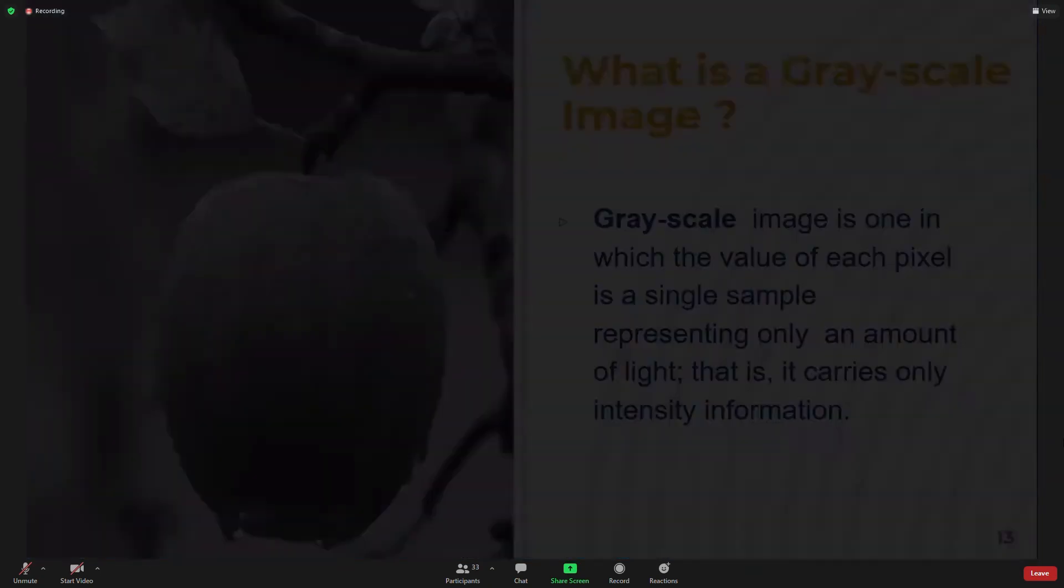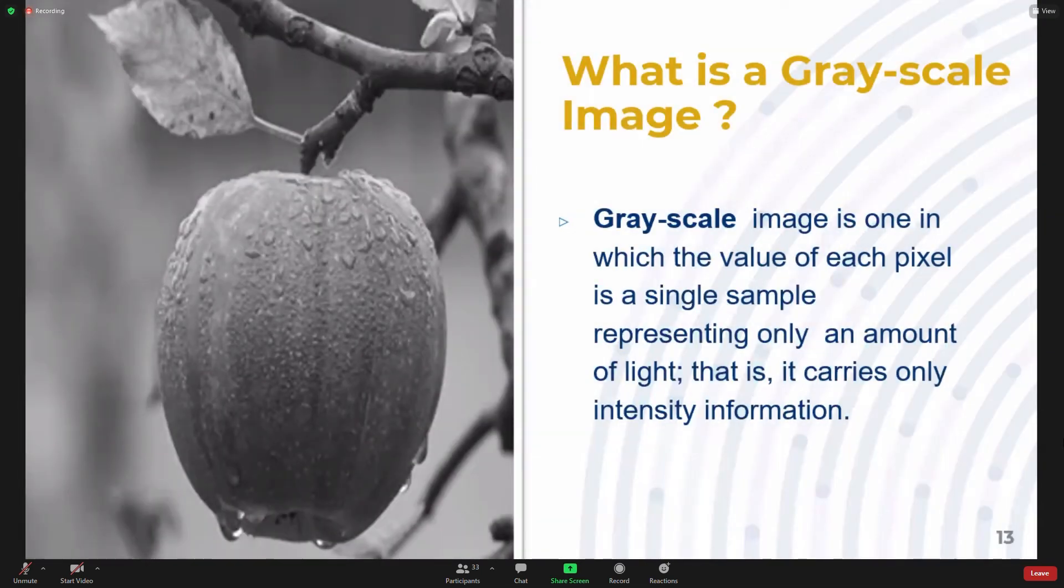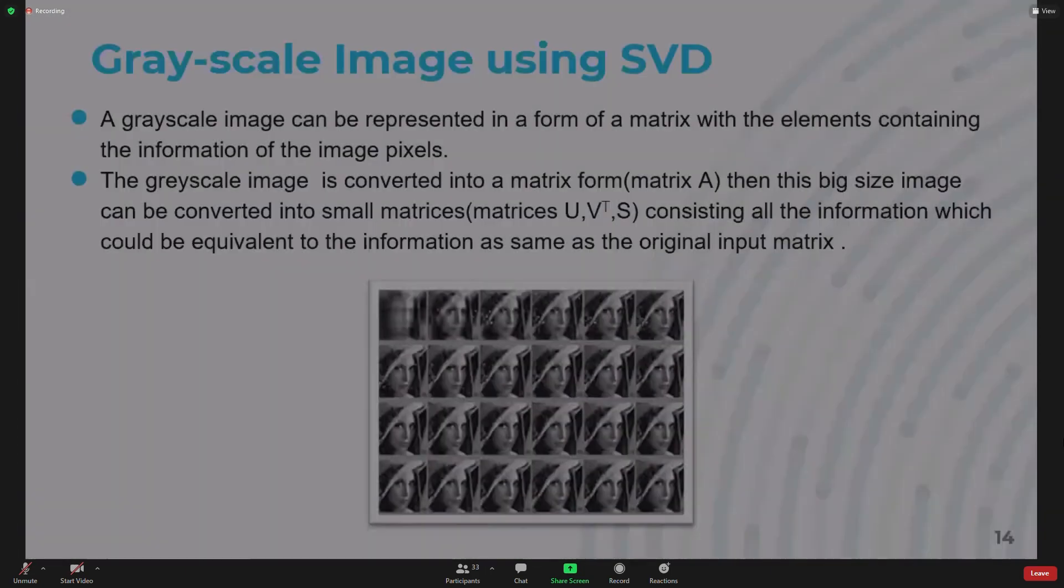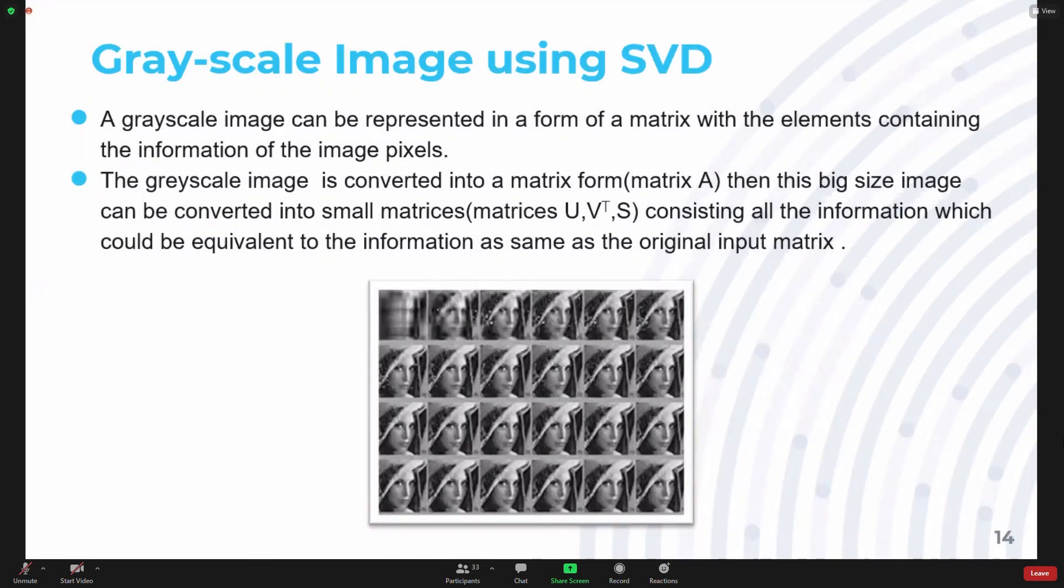A grayscale image is an image which consists of pixels that have information such as intensities of light. A grayscale or monochromatic image is an image made by shades of gray. There are about 256 shades of gray in a grayscale image. A grayscale image undergoes SVD as follows. Firstly, the grayscale image is converted into a matrix using code.